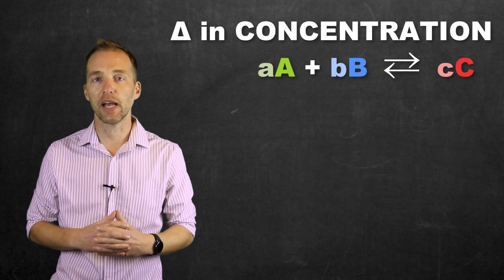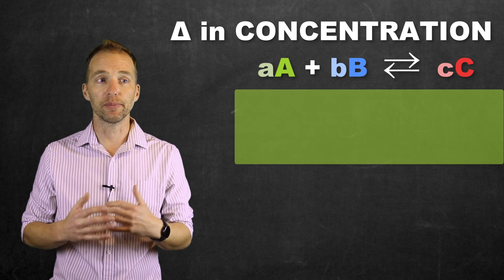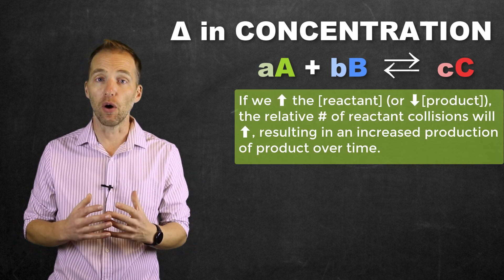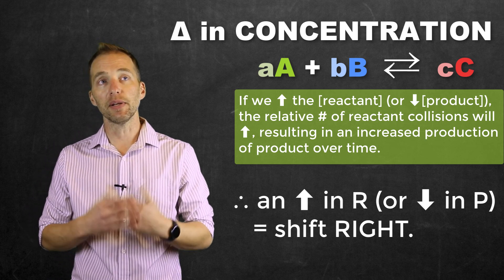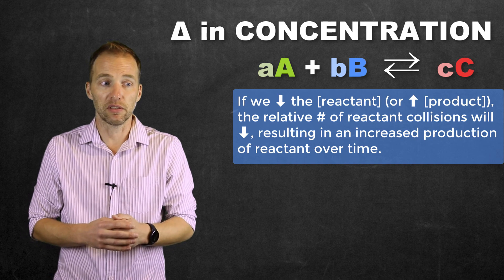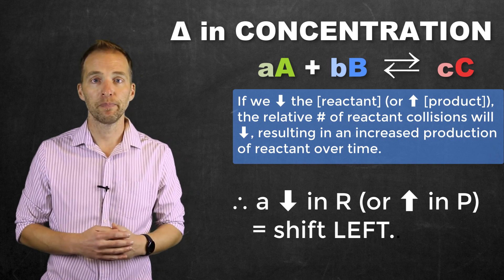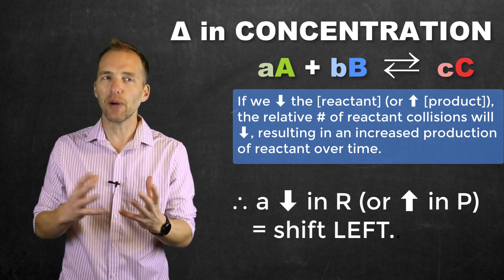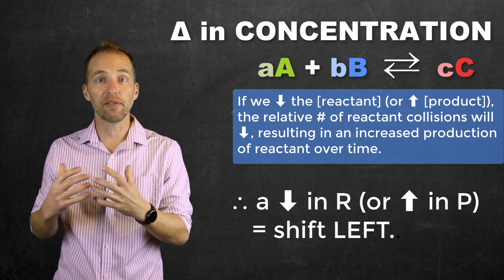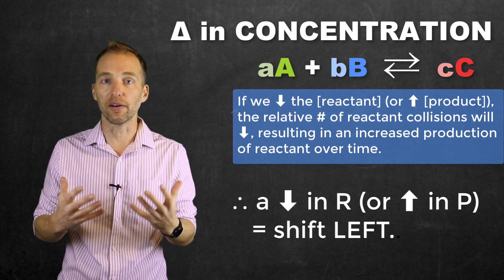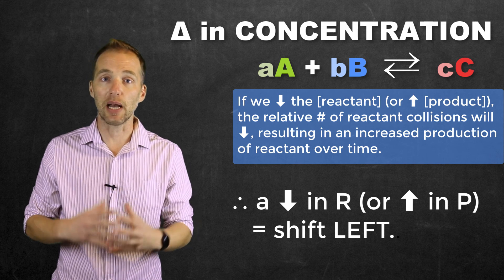If a system is at equilibrium and we add more reactant, according to Le Chatelier's principle the system will respond by using up that excess reactant, forming more product and shifting to the right. Conversely, if we decrease the concentration of the reactant, the system responds by producing more reactant and shifting to the left. This is because adding more reactant means more particles to collide, so initially the rate of the forward reaction exceeds the reverse, until the rates re-establish the value for K.